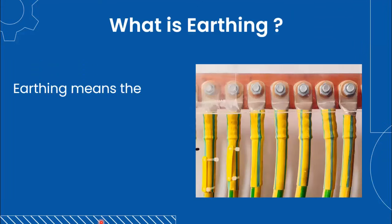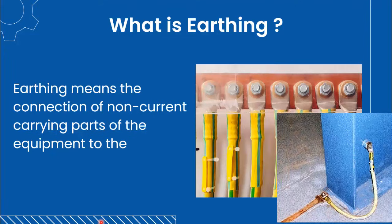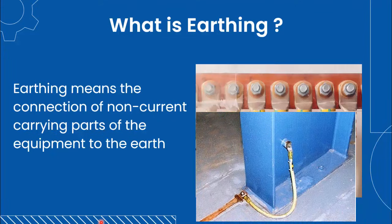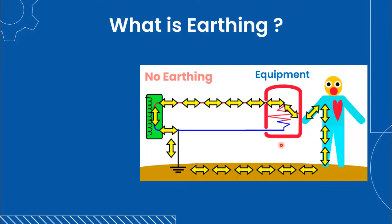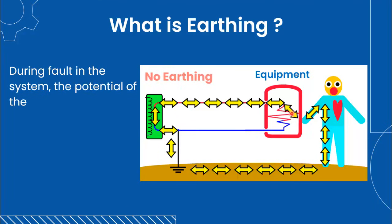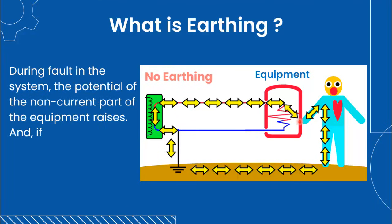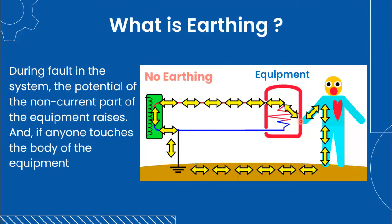Earthing means the connection of non-current carrying parts of the equipment to the earth. In this case, the equipment is not connected to the earth. In case of a fault, in which a phase entering the equipment accidentally touches the body of equipment, the potential of the non-current part of the equipment raises.